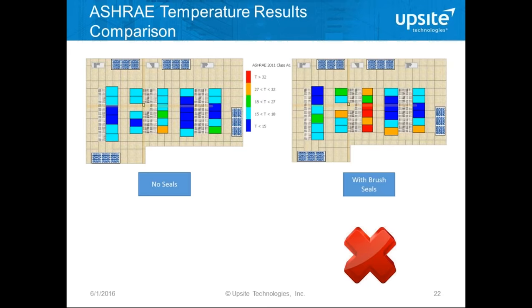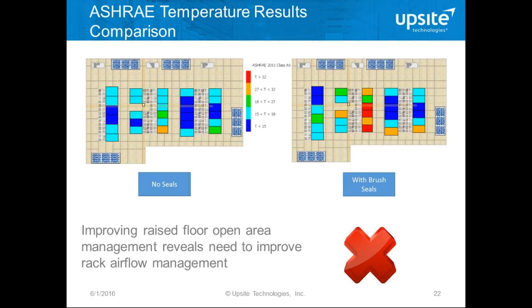When we add the brush seals, things haven't got better — this is a disappointment because it's definitely the right thing to do to manage that lost airflow. But something else is going wrong. Now several of the cabinets are actually above the recommended range. We need to improve the rack airflow management.